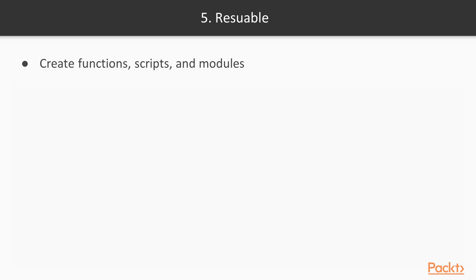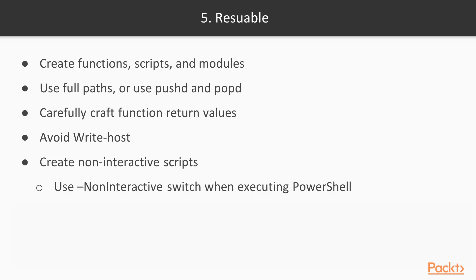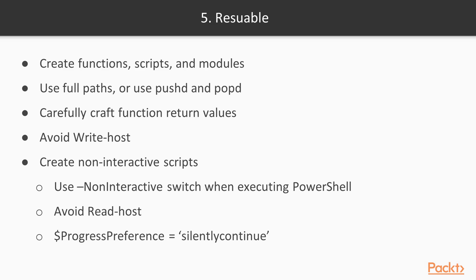The final trait is reusable. This is probably the most difficult trait to define. Here are a few suggestions: organize your code into functions, scripts, script files, and modules — we will investigate this more later in this course. Do not rely on relative paths or current directory when passing file information to other modules, other scripts, and other cmdlets. Use push-d or pop-d when traversing the file system in a script. Make sure the return values from the script are semantically sound. Avoid using write-host, create non-interactive scripts, do not use read-host, and set the progress preference global variable to silently continue.